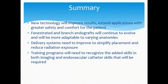In summary: new technology will improve results and extend applications, providing greater safety and comfort for patients. Fenestrated and branch endografts will continue to evolve and will hopefully be more adaptable to a variety of anatomies. Delivery systems clearly need improvement — placement must be simplified and radiation exposure reduced, which is not insignificant for the operator and the patient. Training programs will need to recognize the added skills in both imaging and endovascular catheter techniques required to successfully place these devices. It will likely be very specialized centers that develop the expertise in these areas.